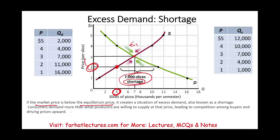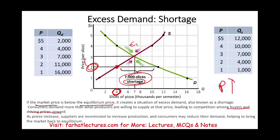Consumer demand exceeds what producers are willing to supply at that price, leading to competition among buyers. Eventually, if the government doesn't intervene, prices will start to go up and we'll go back to equilibrium. As prices increase, suppliers are incentivized to increase production. As prices go up, suppliers are willing to produce more, and eventually at $3, with 7,000 units available, that's the perfect equilibrium — people will buy the whole 7,000 units available.